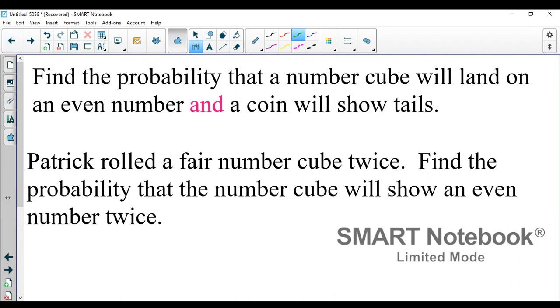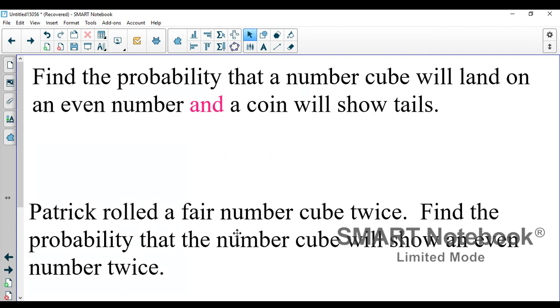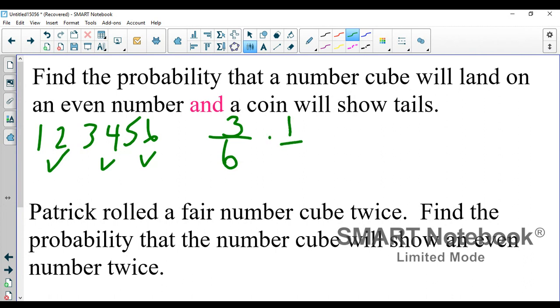Find the probability that a number cube will land on an even number and a coin will show tails. Well that number cube is one, two, three, four, five, and six. Even numbers, there's three of them, that's three out of six. A coin will show tails, that's one out of two. So that is three twelfths, and when you simplify it, it will be one-fourth.